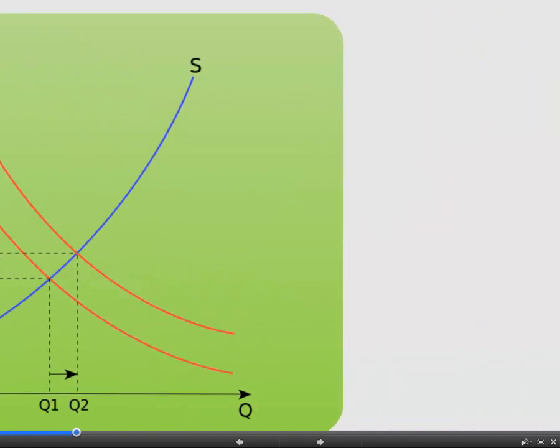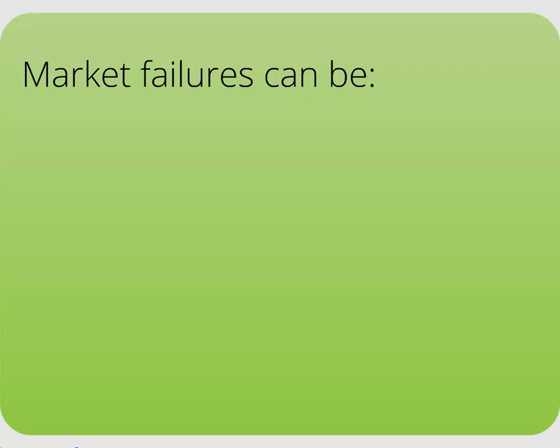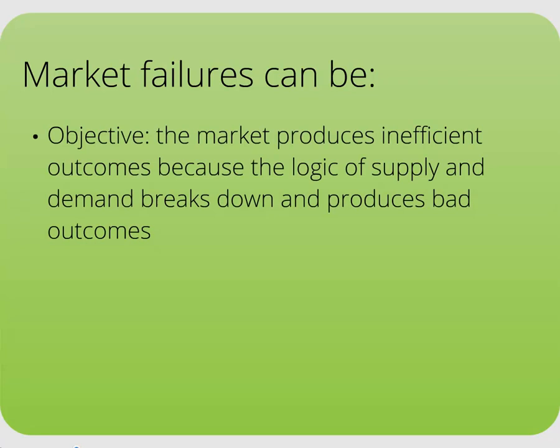Market failures occur when an economic market does not produce or distribute the needed or simply desired goods and services. These failures can be objective or subjective. Objective market failures mean that the logic of the supply and demand curve simply does not work and that the market is producing an inefficient outcome. There is no equilibrium and the market does not clear, creating inefficiency, waste, or price hiking.